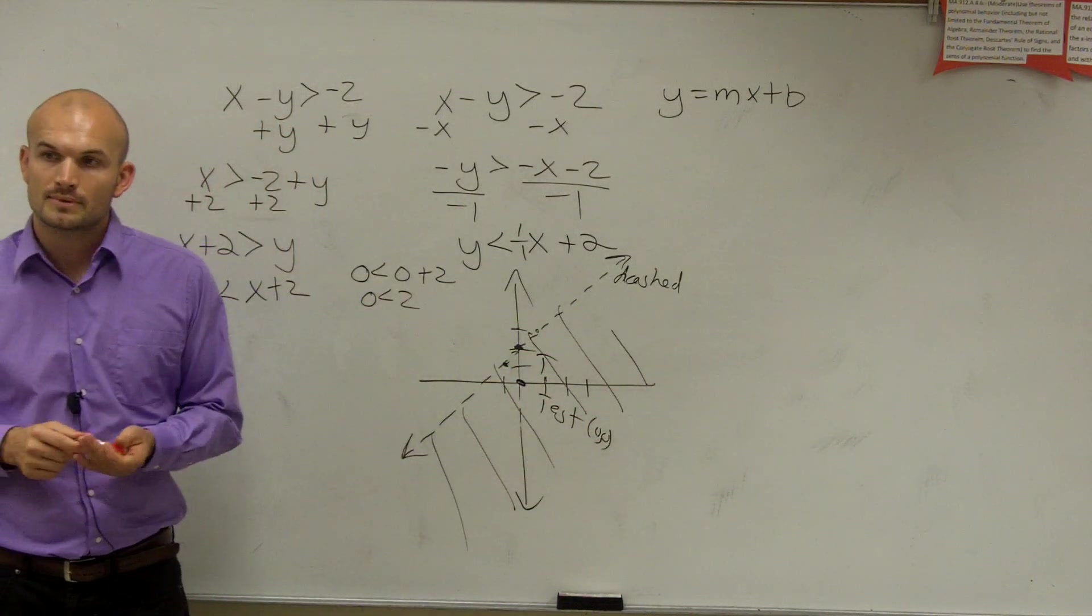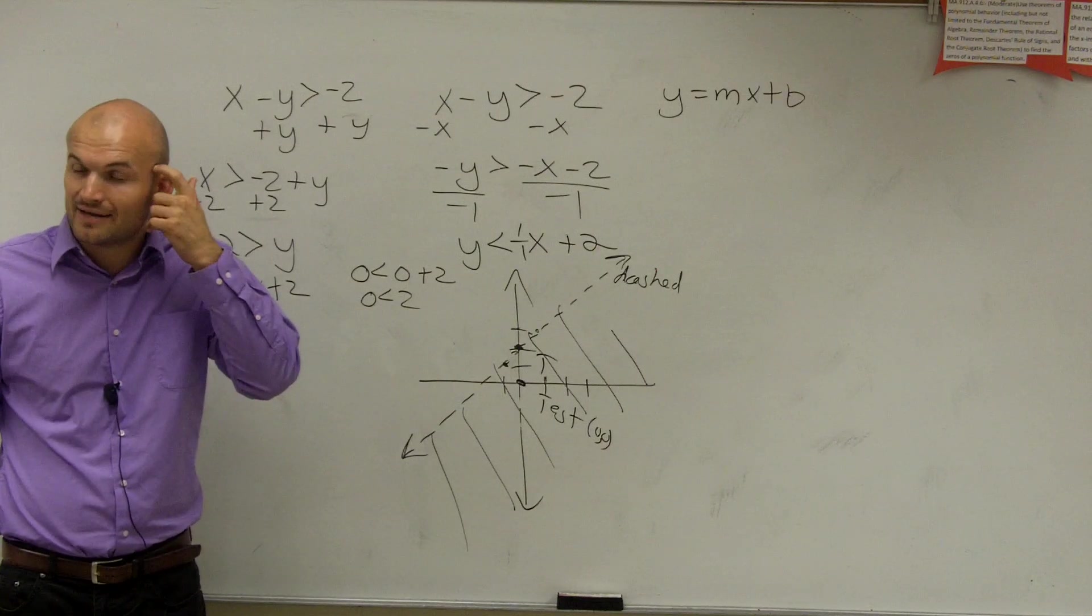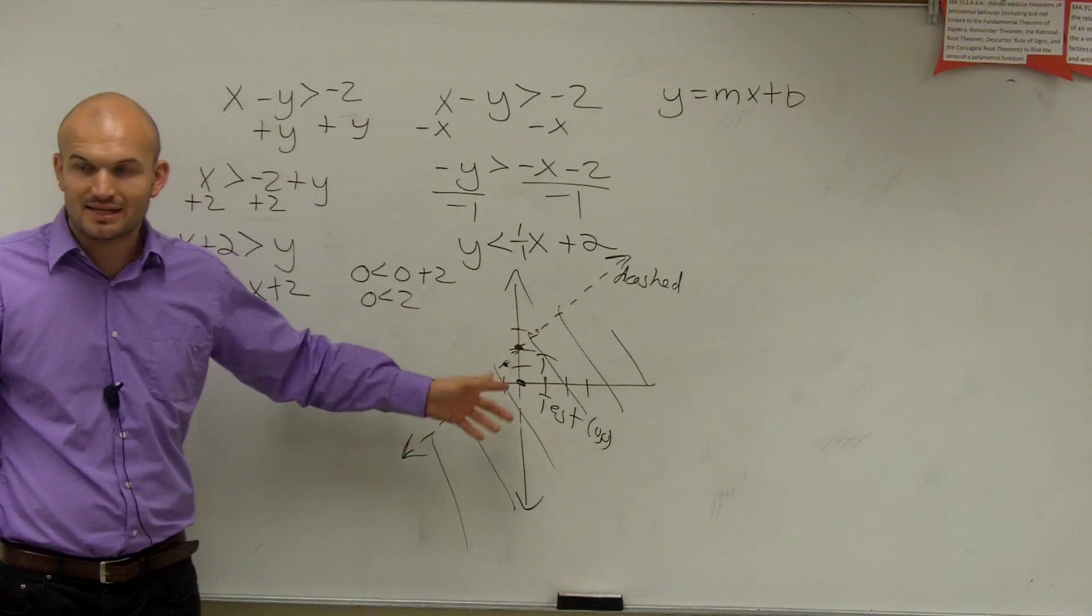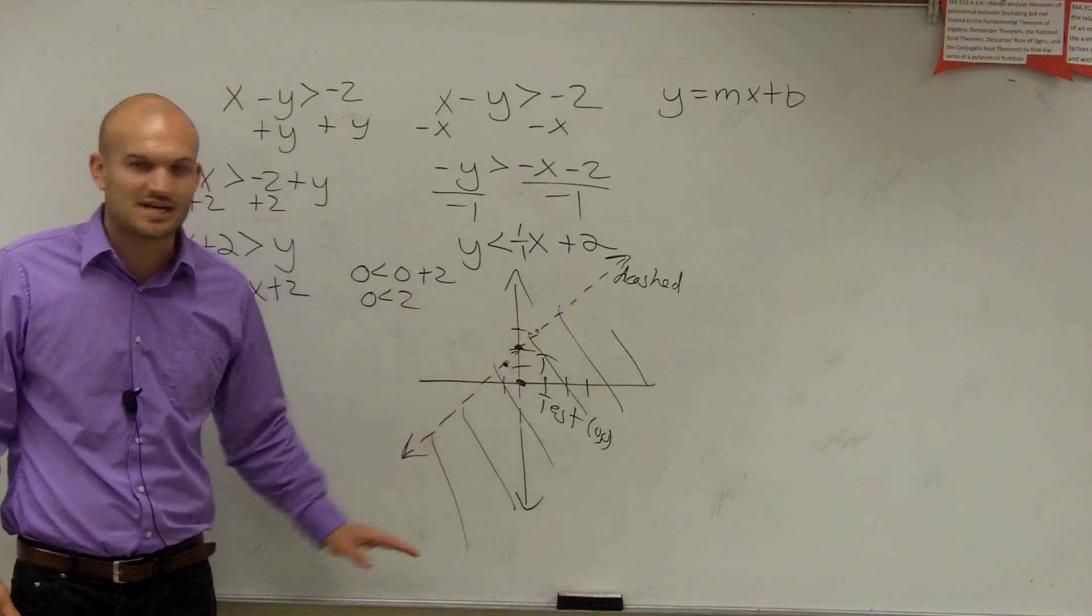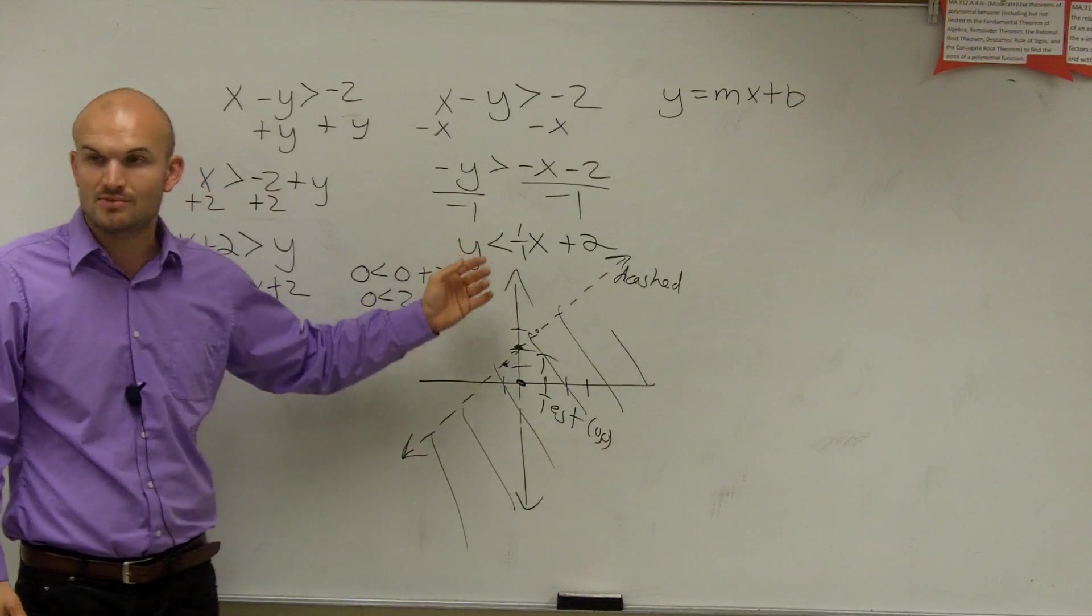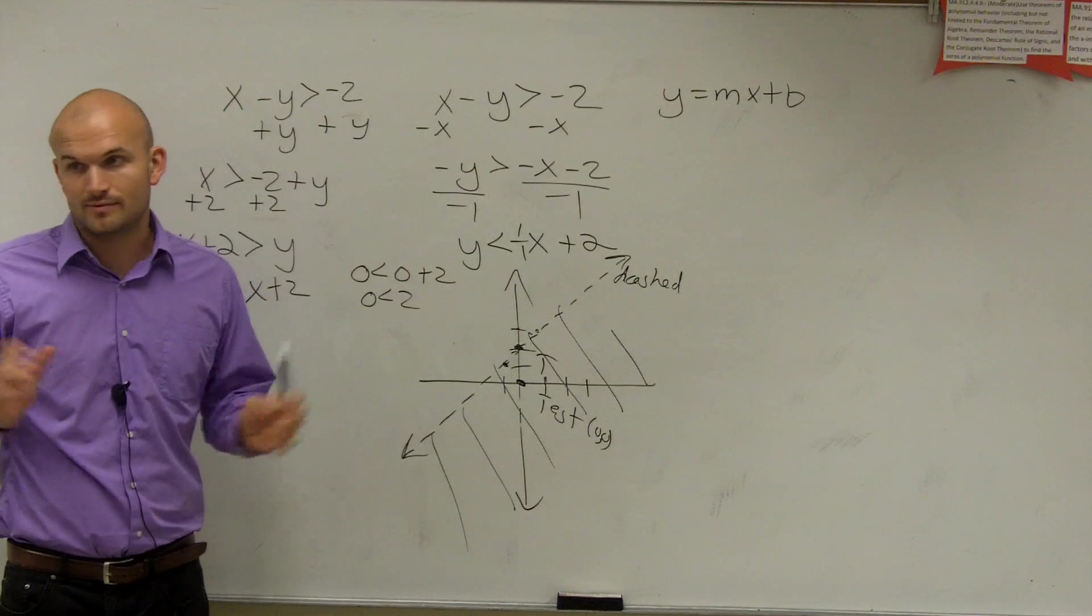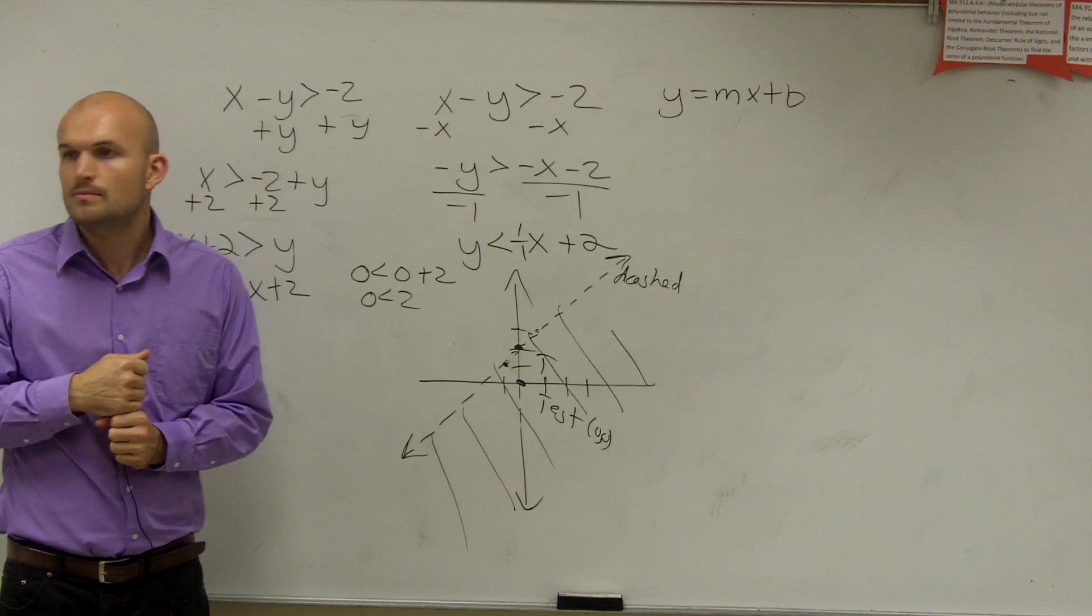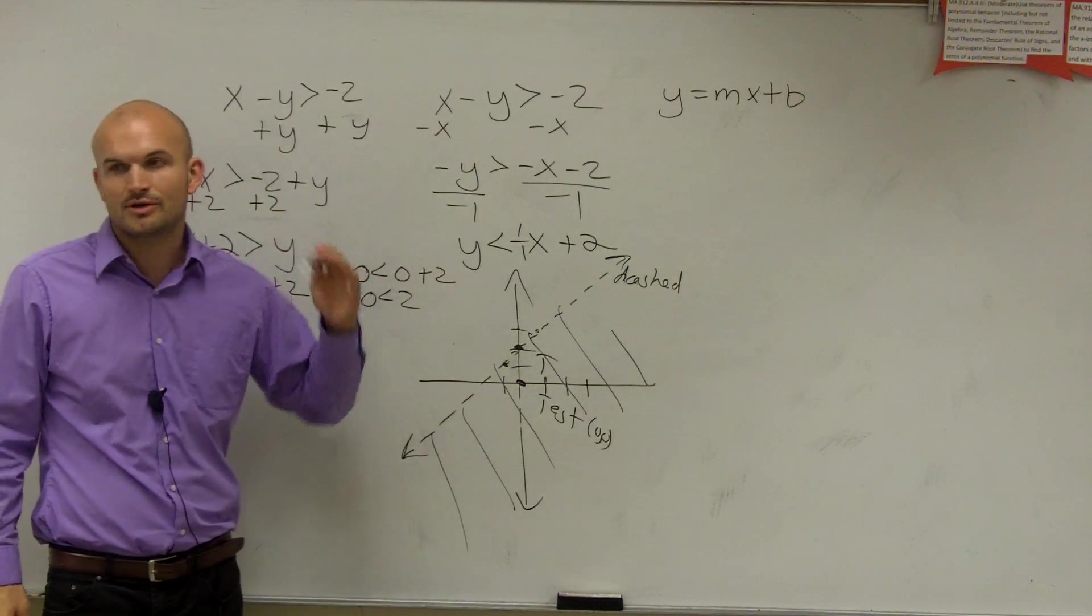Wait, what do you do if it's going through? If it's going through, you have to pick a new point that's not on the line. Because if it goes through it, you're just testing the line. So if the line's true, then you know it's solid. If it's false, then it'd be dashed, which we already know based on the inequality symbol. So just pick a point off the line. That's all you've got to do for your test point. It can be anything, just as long as it's not on the line. It can be any number you want to.